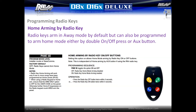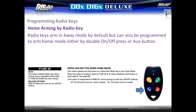Radio keys will arm in away mode by default, but can also be programmed to arm in home mode by either double pressing the on or off buttons, or pressing the auxiliary button, depending on programming preference. Enable option p69e 5e to allow arming in home mode by pressing the on or off buttons twice within four seconds. This feature will only function if zones have been programmed for home mode arming first. The radio key auxiliary button can also be programmed as a dedicated home mode arming button — activate option p120e 3e to allow the blue button to arm the system in home mode.